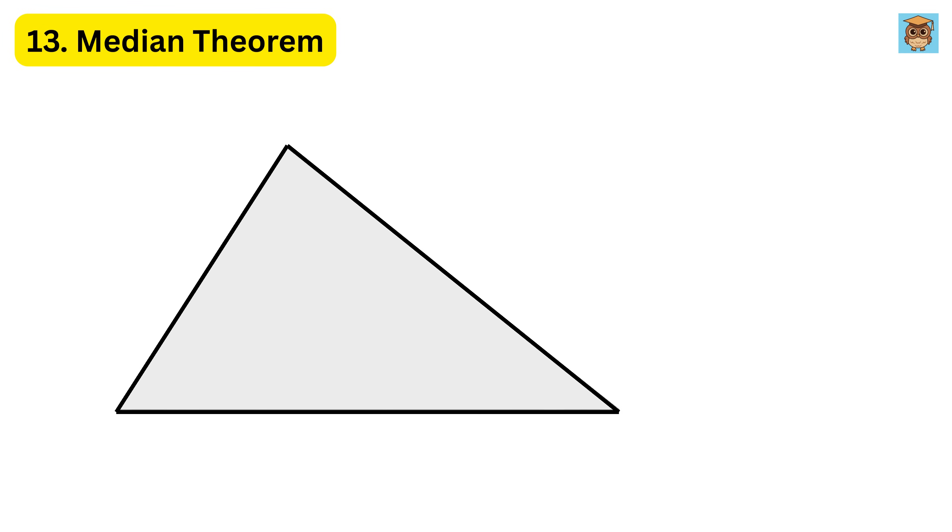suppose this triangle has a total area of 30 square centimeters. If you draw this median, it will split the triangle into two triangles, this and this, and each triangle will have an area of 15 square centimeters, even if their shapes look different.